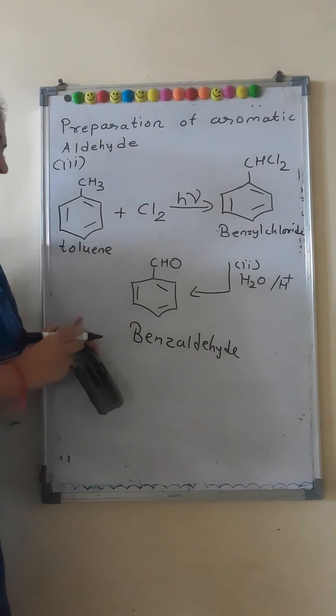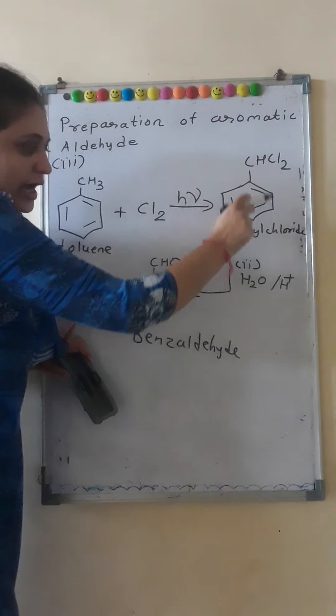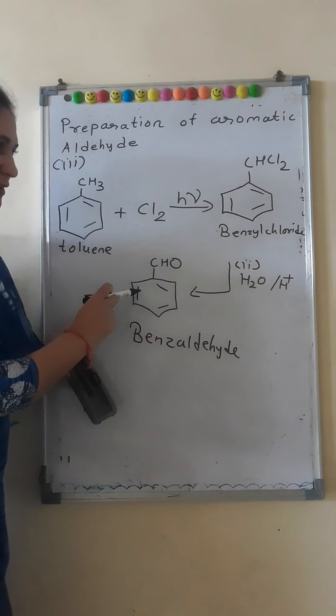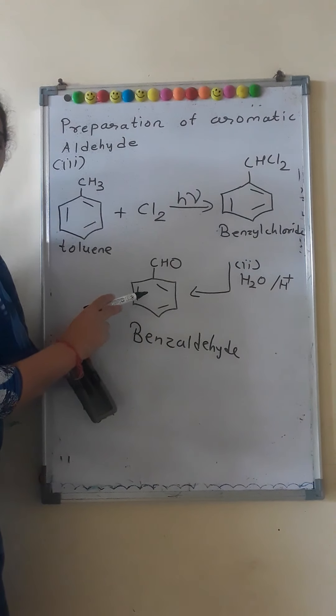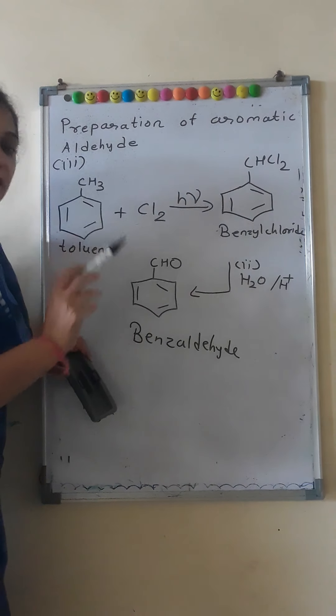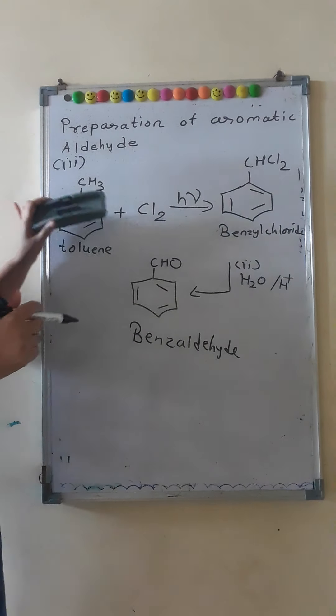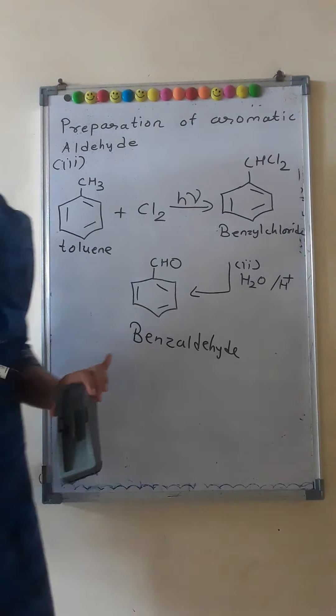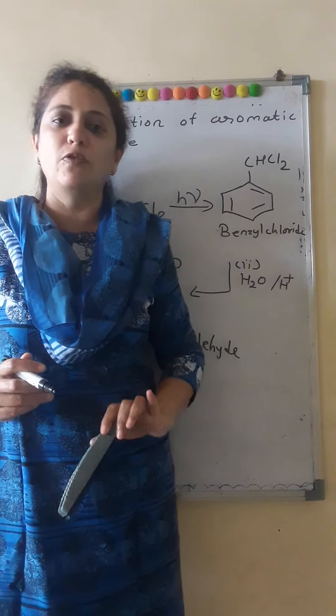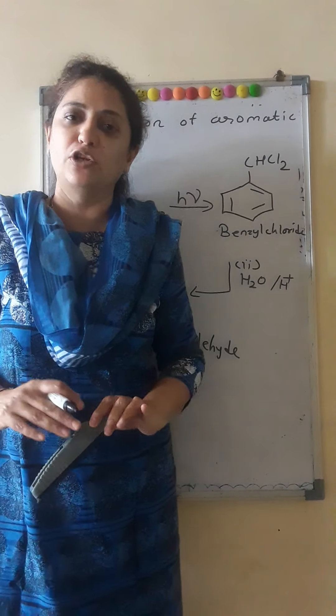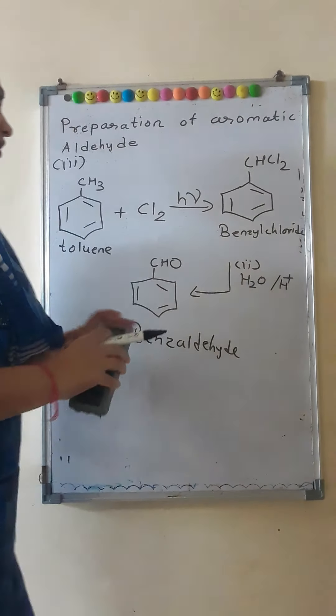Then, on hydrolysis, benzal dichloride gives us benzaldehyde. So this is the third method in which toluene gets converted to benzaldehyde.